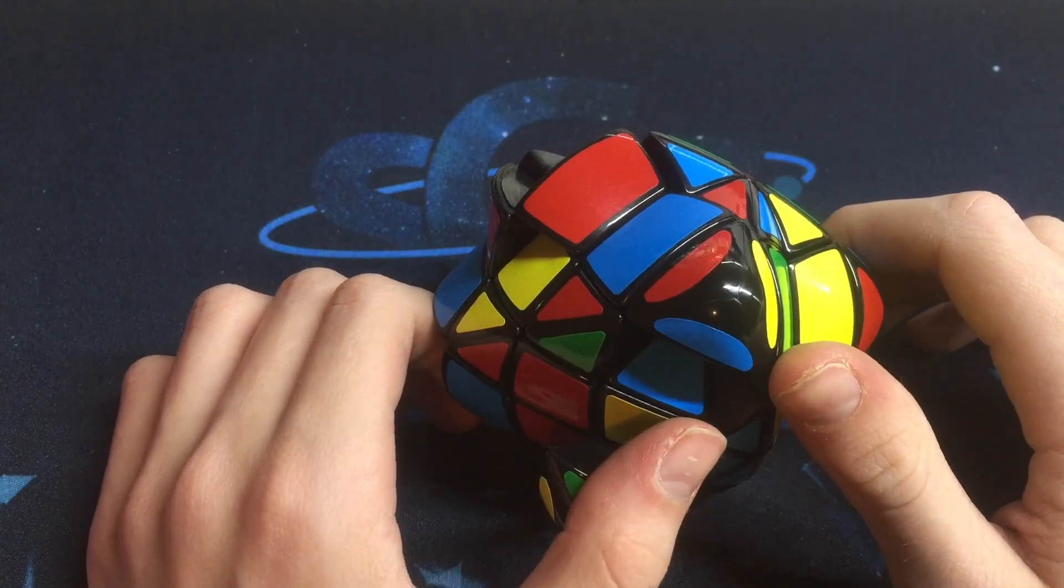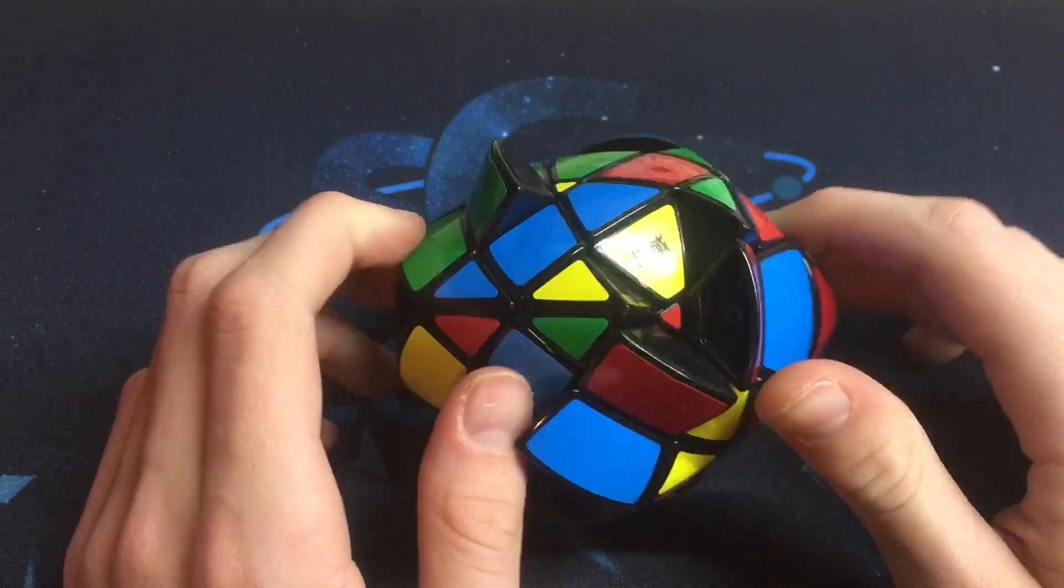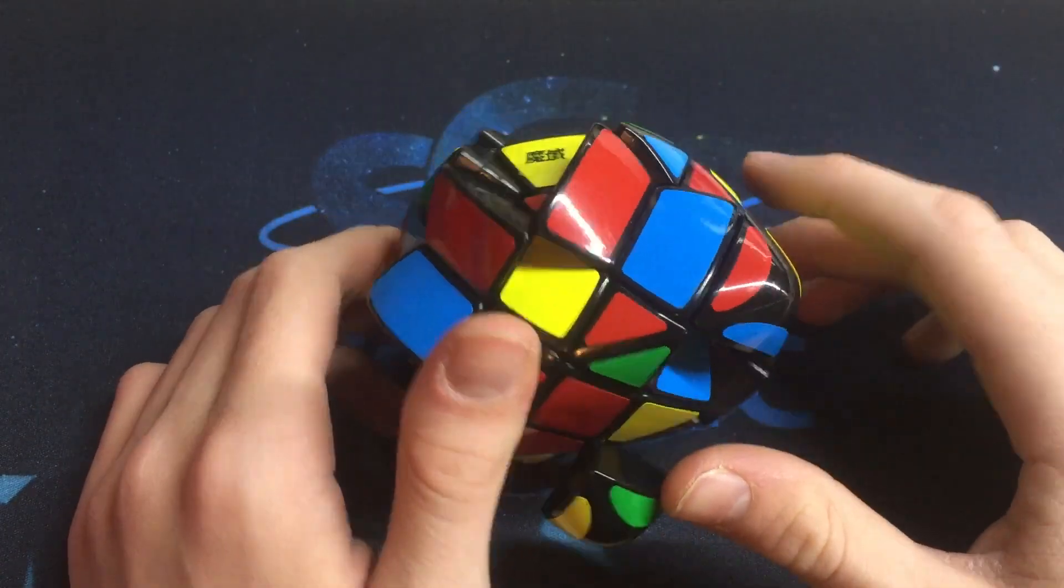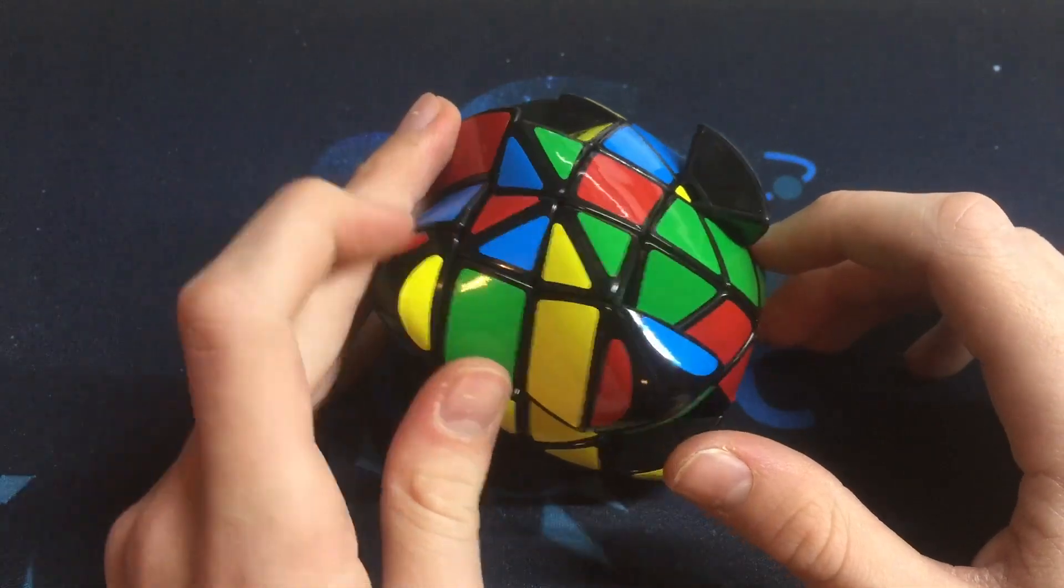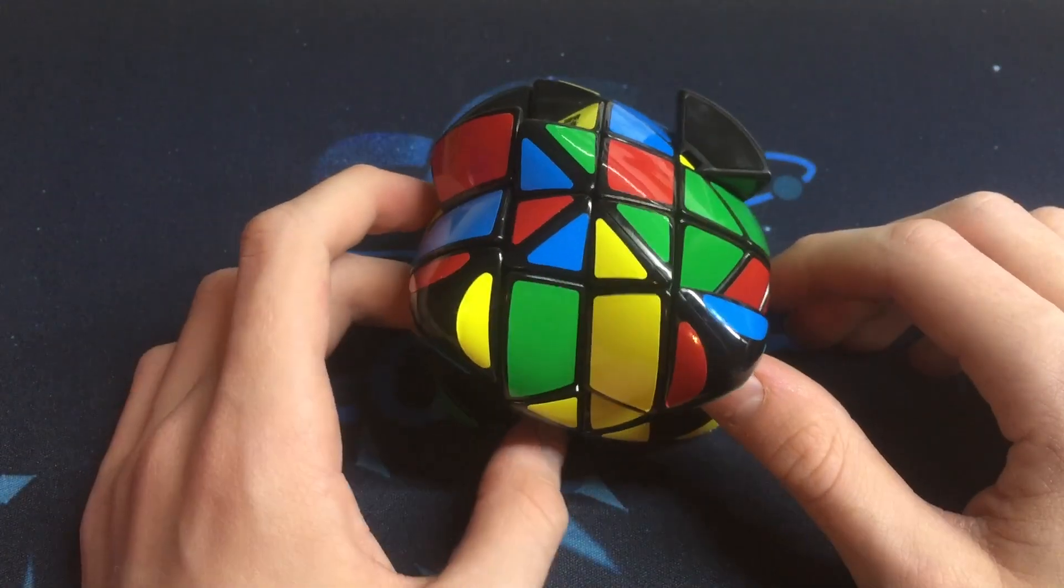This is the Mega Morphix. Master Morphix. I think it's Mega Morphix. This is basically built out of an Aosu. It's the shape mod of it. And I thought it was simple to solve. It's basically just a 4x4 but I really don't know how to do it. I don't know how to go about doing it.